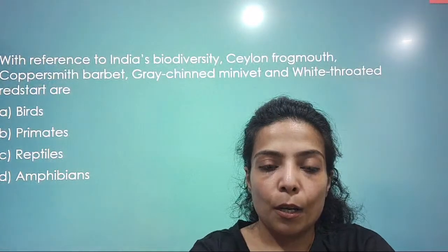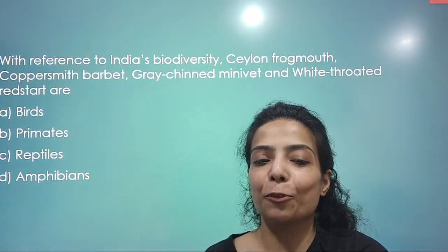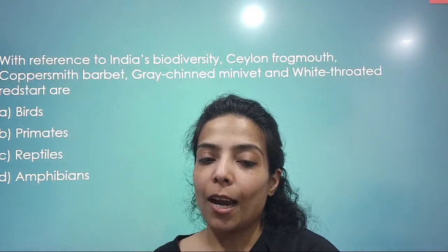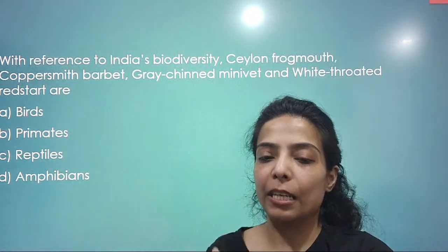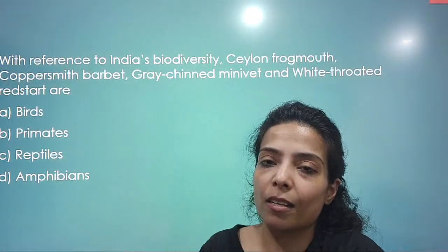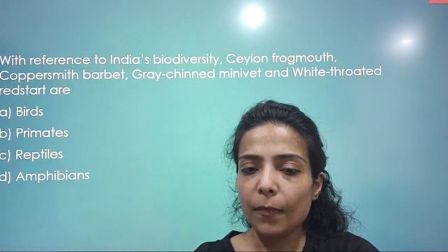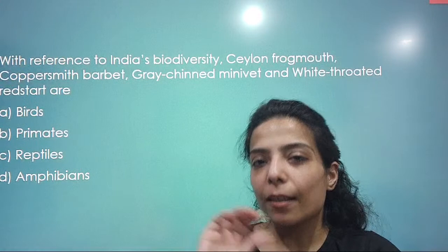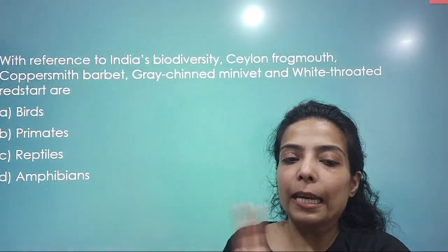With reference to India's biodiversity: Ceylon Frogmouth, Coppersmith Barbet, Gray-chinned Minivet and White-throated Redstart. Some people might think there are amphibians involved given 'frogmouth', but these are all birds. Words like 'throated' and 'redstart' generally indicate bird species. This was one of those 20% questions — if you know the answer, you can mark it; if not, you should not risk guesswork. The straightforward answer is that all four are varieties of birds.